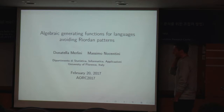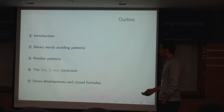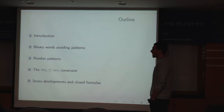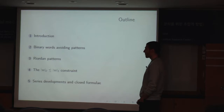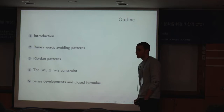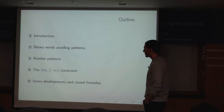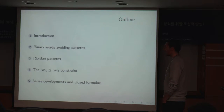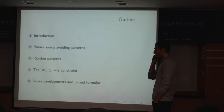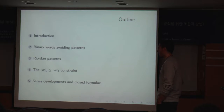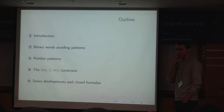Today I would like to show you something about algebraic generating functions for languages avoiding pre-ordered patterns. I divided my talk in five parts. First, a quick recall of some basic definitions; then we tackle the problem of enumerating the language of binary words avoiding a pattern; then we introduce the concept of reordered patterns to require an additional constraint on the content of each word; and finally we see some series developments and closed formulae for the generic coefficient of some generating functions.